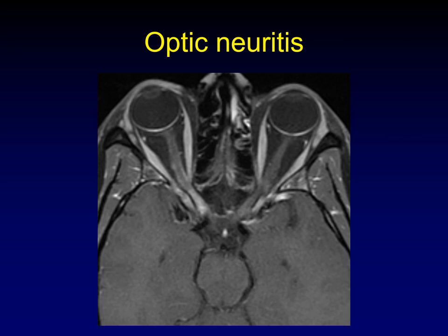In optic neuritis, we often get that classic tram-track look of enhancement along either side of the optic nerve — the nerve itself enhancing in its canalicular segment. If you had a squamous cell carcinoma that had found its way to the nerve, could it track back like this? Absolutely, though probably not symmetrically. This is a pretty classic look for optic neuritis, but perineural spread would have a similar appearance if it managed to get along the dura of the second cranial nerve.